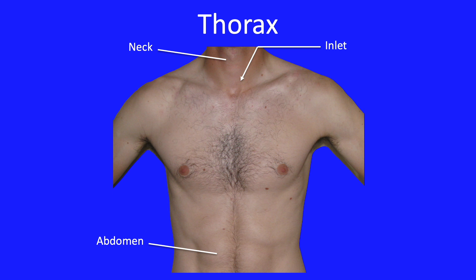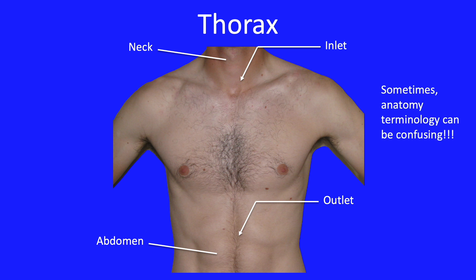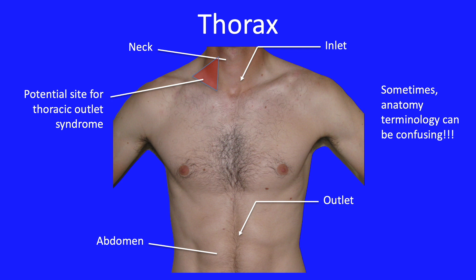Let me point out that sometimes the use of terminology in anatomy can be confusing to the beginning student. The outlet of the thorax is, as just described, an anatomical term reserved to name an aperture. Clinically, however, the term thoracic outlet is used to describe the region where great vessels and a major nerve plexus exit the thorax — and this region is actually near the inlet.